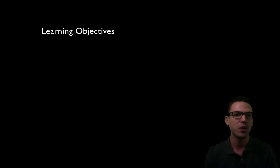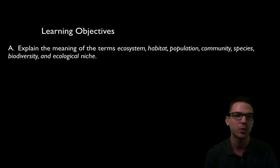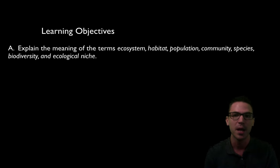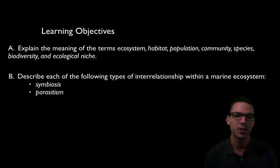By the end of this video there are a couple of learning objectives you should be able to hit. The first one is objective A off the syllabus, which is explaining the meaning of the terms ecosystem, habitat, population, and the others listed. You should also be able to describe some of the interrelationships within a marine ecosystem, specifically symbiosis and parasitism. Let's go ahead and get started.